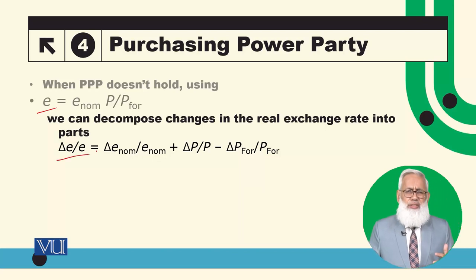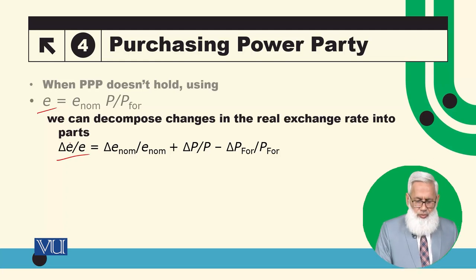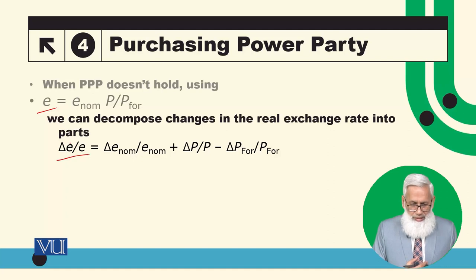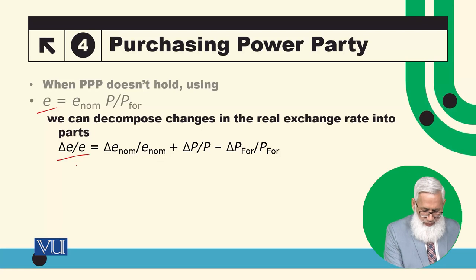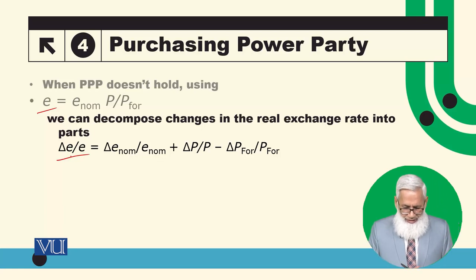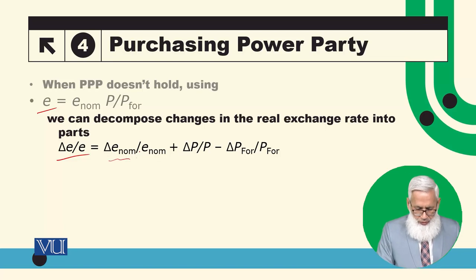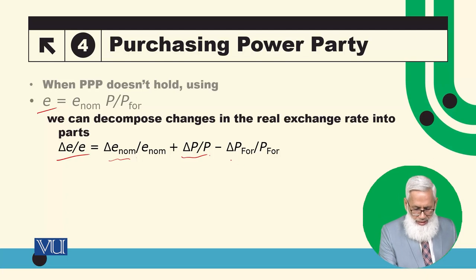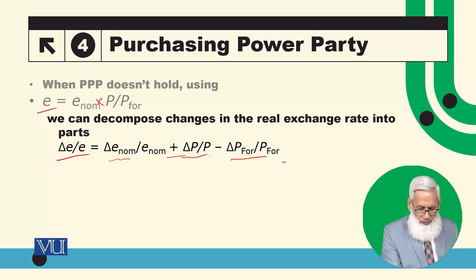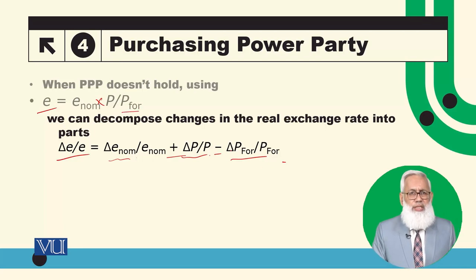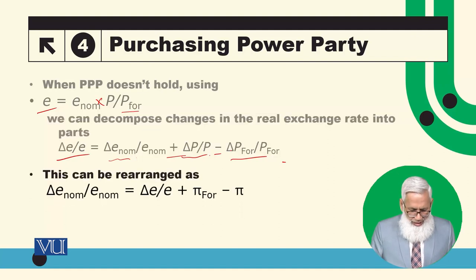اگر دو variables multiply ہو رہے ہوں تو ان کے growth rates add ہو جاتے ہیں، اگر divide ہو رہے ہوں تو minus ہو جاتے ہیں۔ Delta E divided by E — یہ relative change ہے، percentage change ہے — this is the growth rate. So this is equal to: the growth rate of the nominal exchange rate plus the growth rate of domestic prices minus the growth rate of foreign prices. E کے ساتھ P multiply ہو رہا ہے اس لئے add ہوتے ہیں اور P* divide ہو رہا ہے اس لئے minus ہو جاتا ہے۔